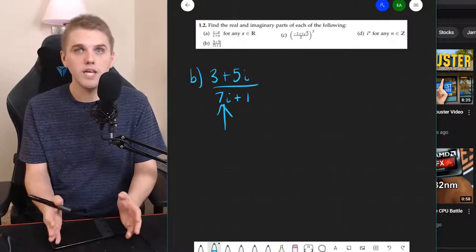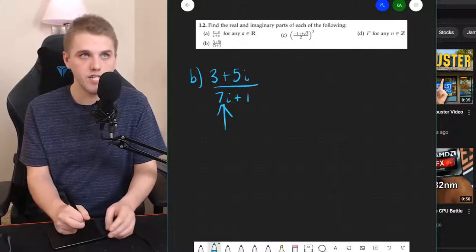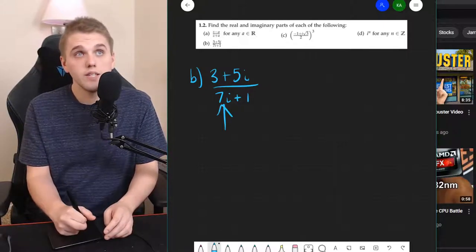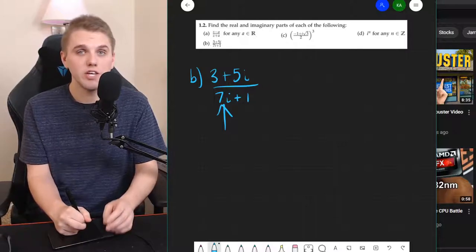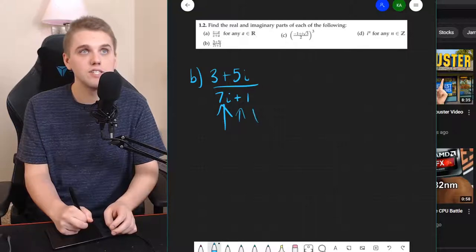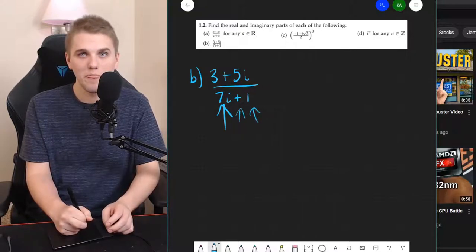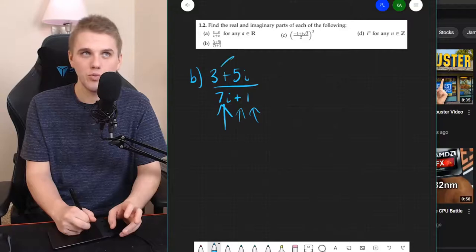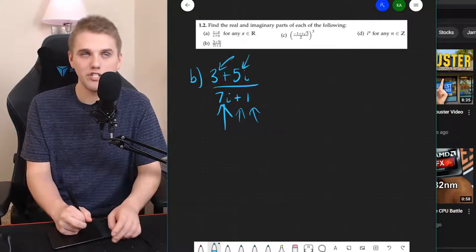So what is the complex conjugate of 7i plus 1? Well, 7i plus 1 is written as the imaginary part plus the real part, which is kind of unusual. Usually we do the real part and then the imaginary part.